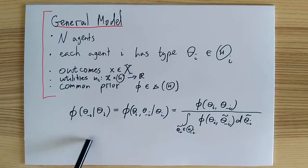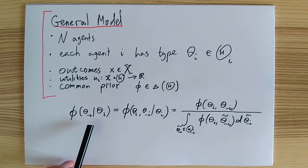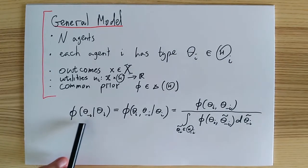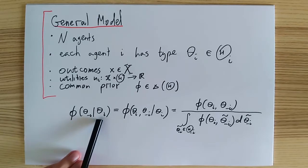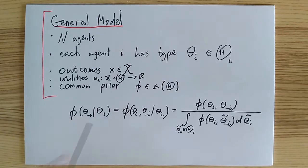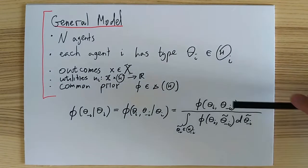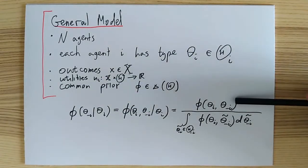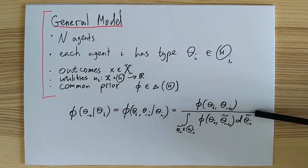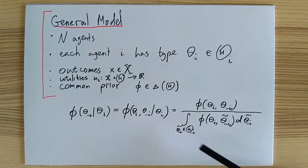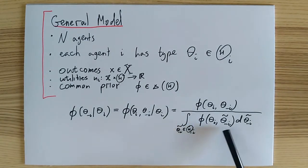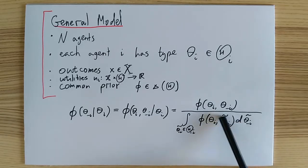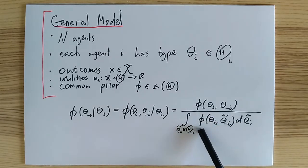In particular, Bayes' rule says that the probability phi that player i assigns to the profile of other players' types theta minus i, given his own type theta i, is given by the ratio of the joint probability of types theta i and theta minus i occurring simultaneously, and the total probability of type theta i occurring, which is given by the integral of the PDF phi of theta over all possible profiles of other players' types, theta minus i tilde.